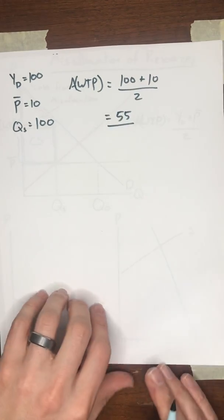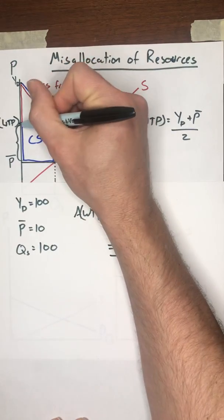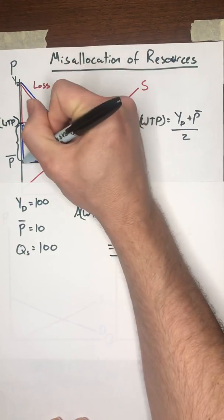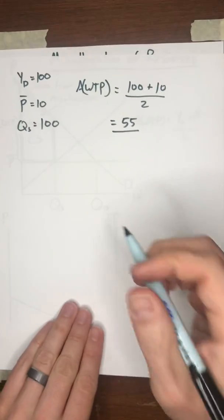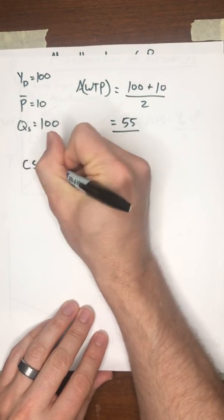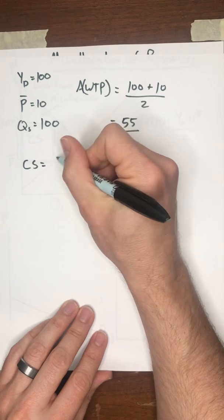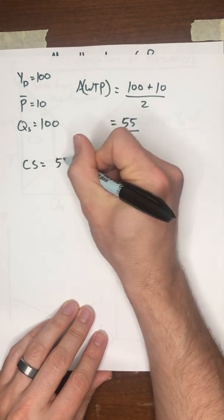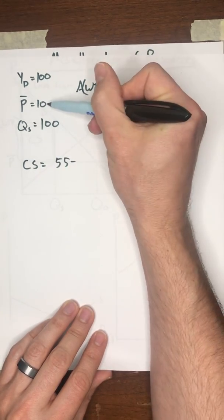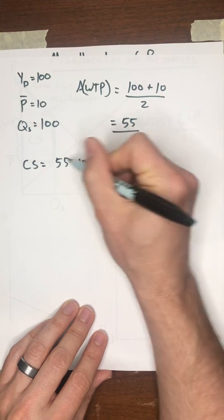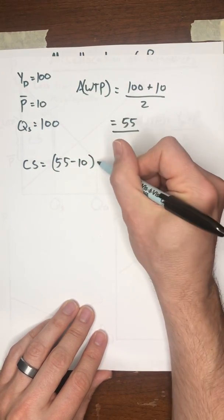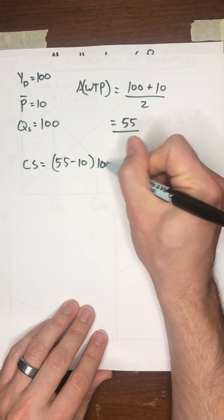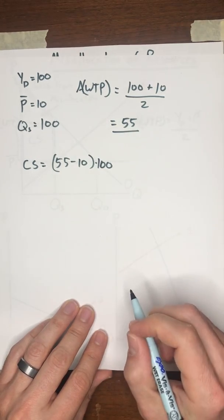So now we know that this is 55, and we want to find the difference between 55 and the legislated price. Consumer surplus will be 55 minus the legislated price of $10 times the 100 units that are trading in this market.